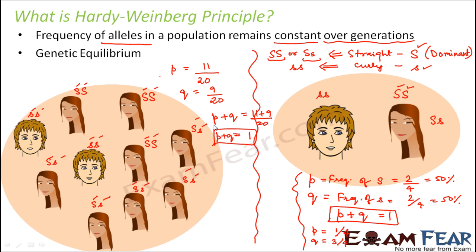This holds true all the time except when mutations occur. Whenever there is a deviation from this rule, it indicates that some evolution is taking place, because some mutation is happening. That means there is some individual which has got a different allele, and those differences come from mutation or any of the factors which cause evolution. So any deviation from Hardy-Weinberg equilibrium would indicate that evolution is taking place. This law is also known as Hardy-Weinberg equilibrium because it is all about the equilibrium state.